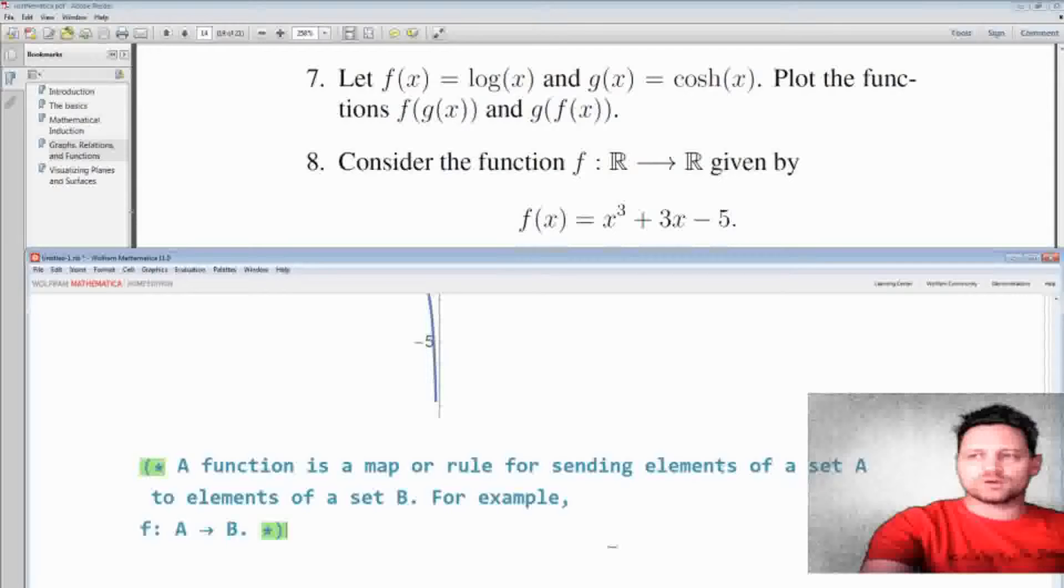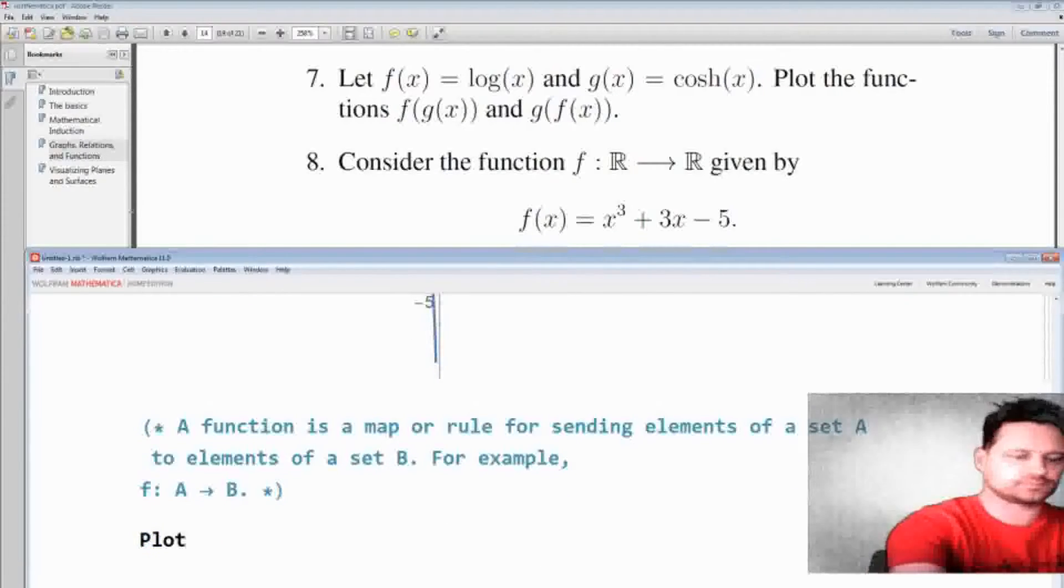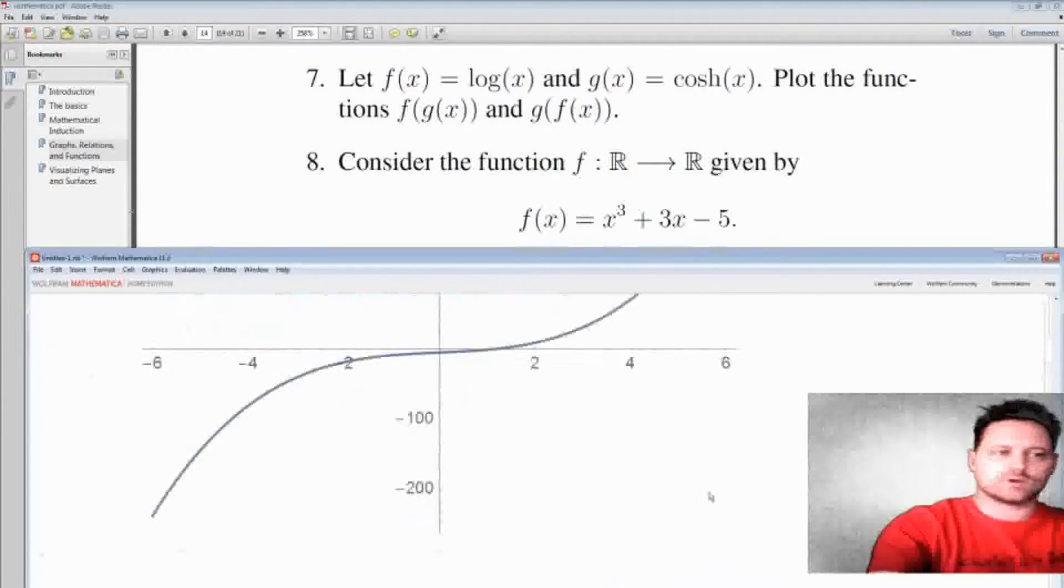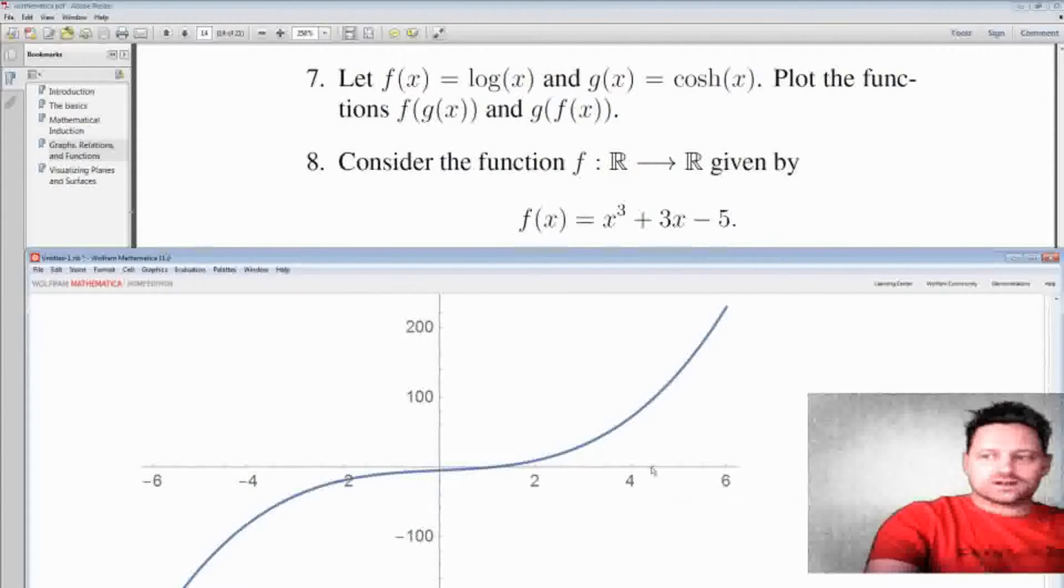Why don't we plot this while we're at it? I will plot x cubed plus 3x. I leave a space for the multiplication but I don't have to. I can put an asterisk. Let's go minus 6 to 6. Shift enter and see what we have. So this is a function. Notice that for every x it's going to exactly 1y.